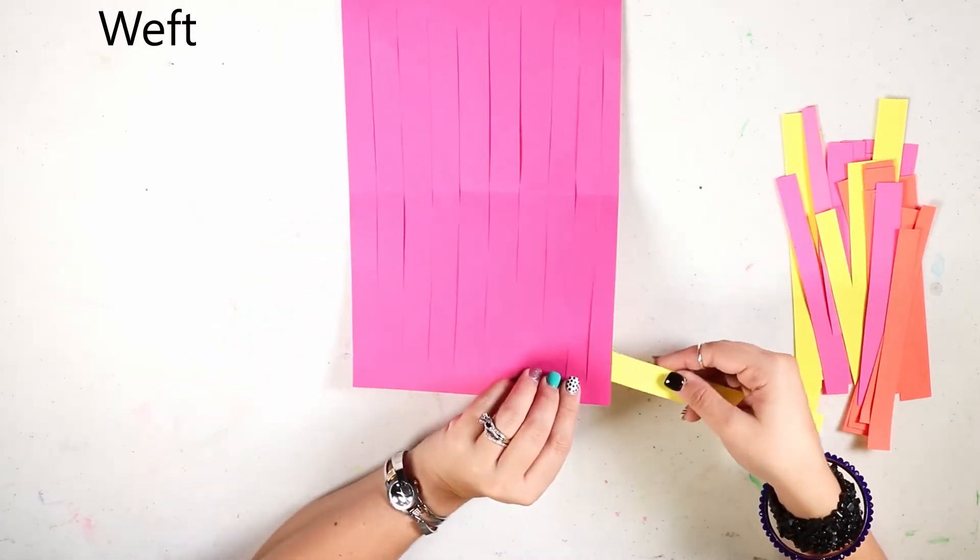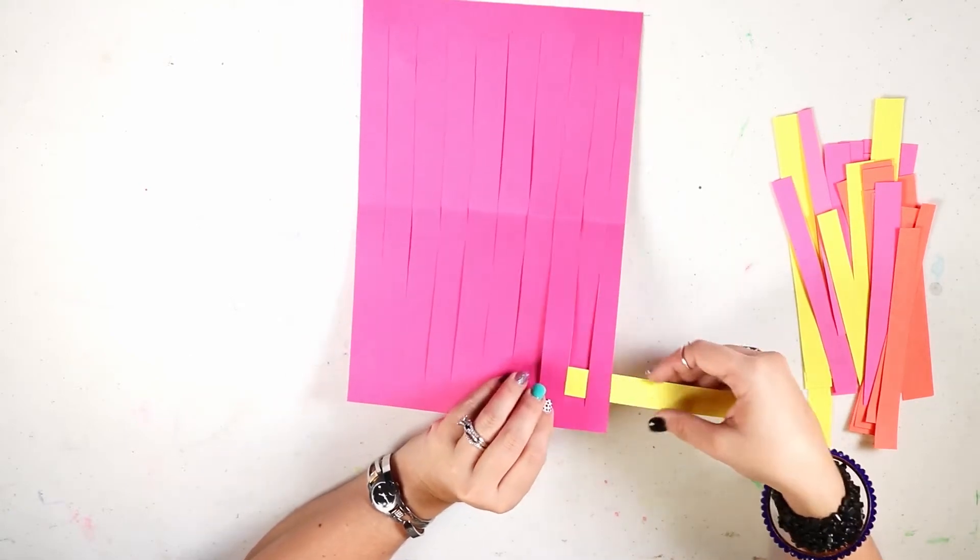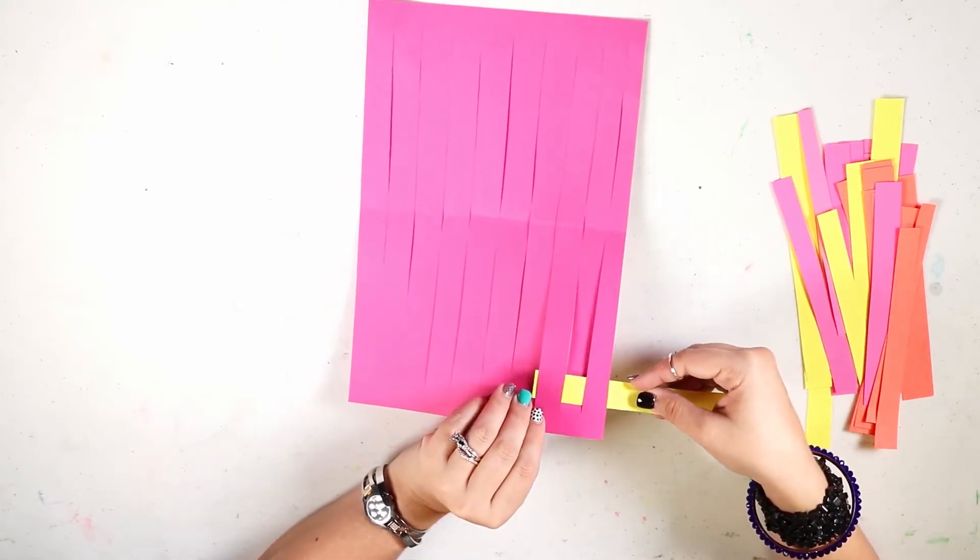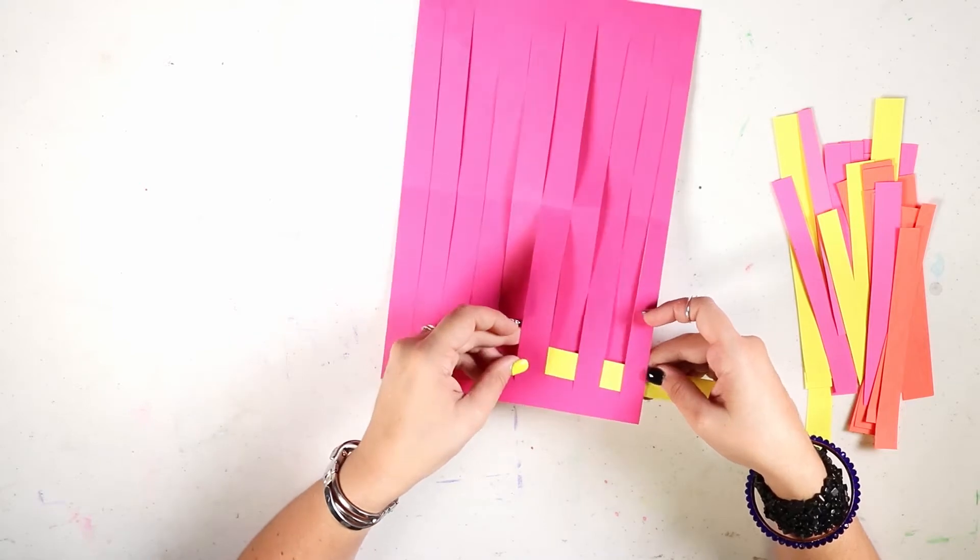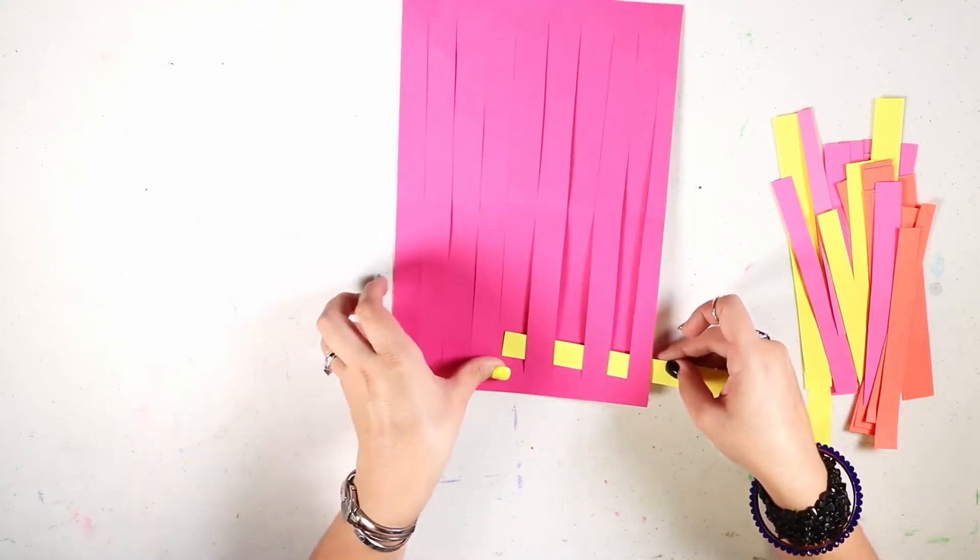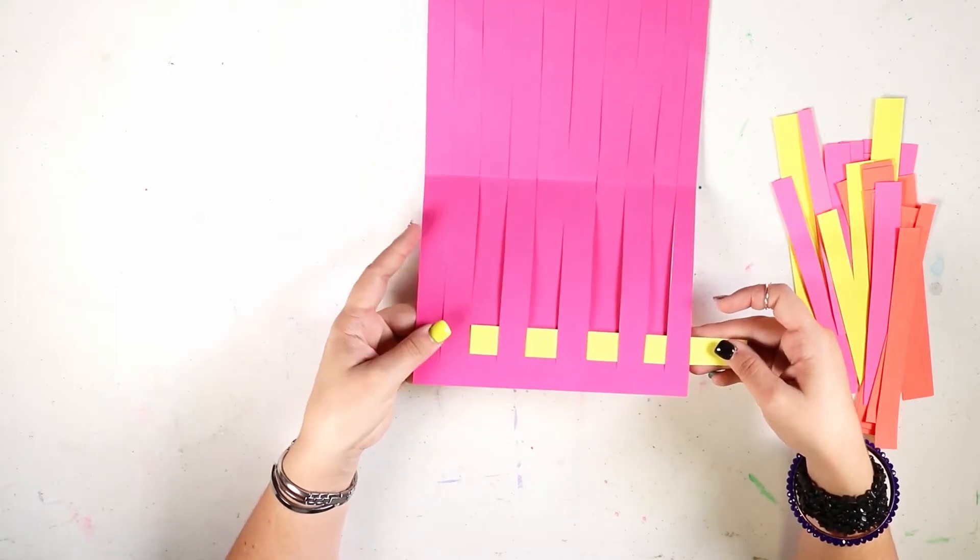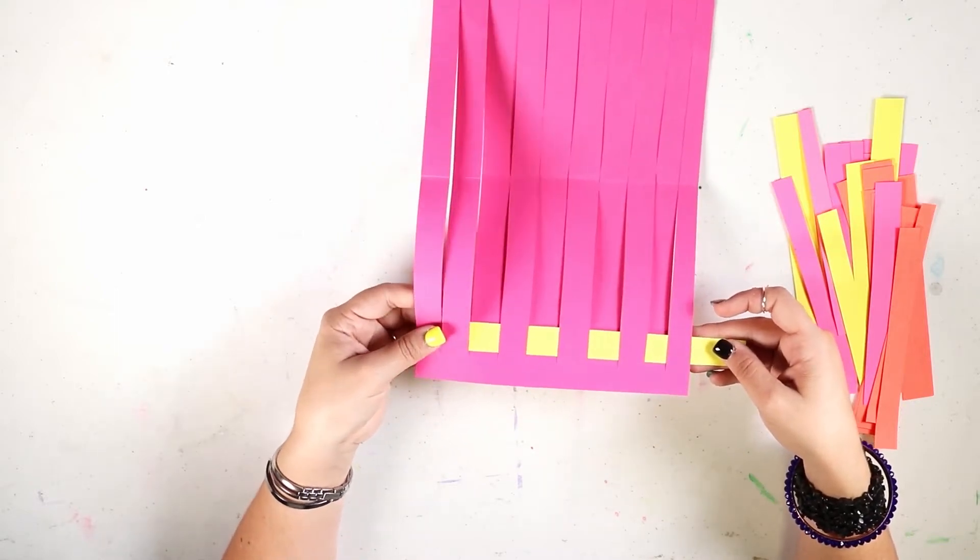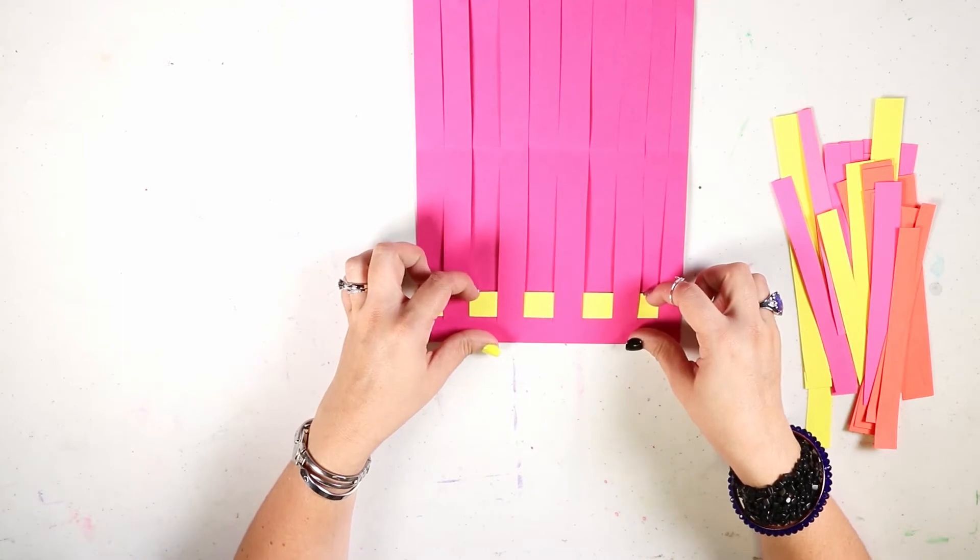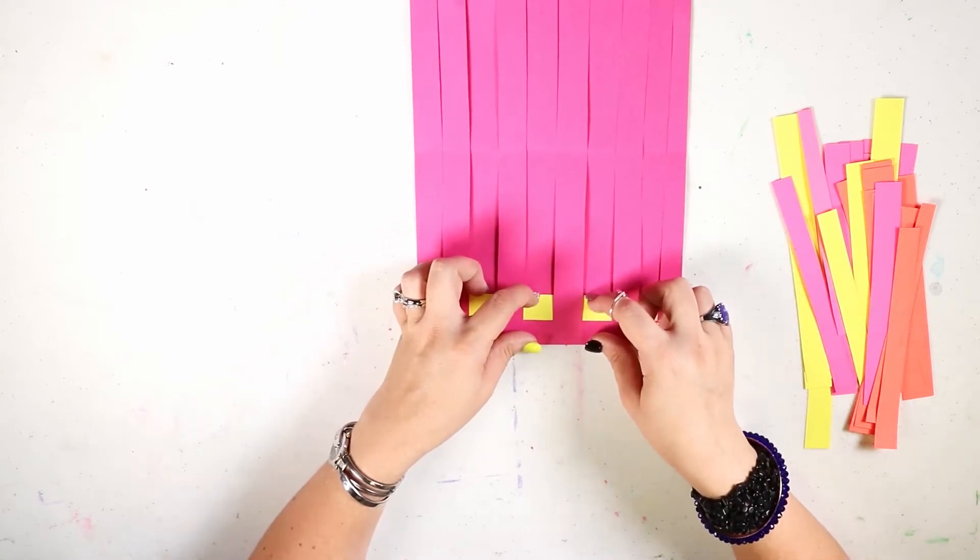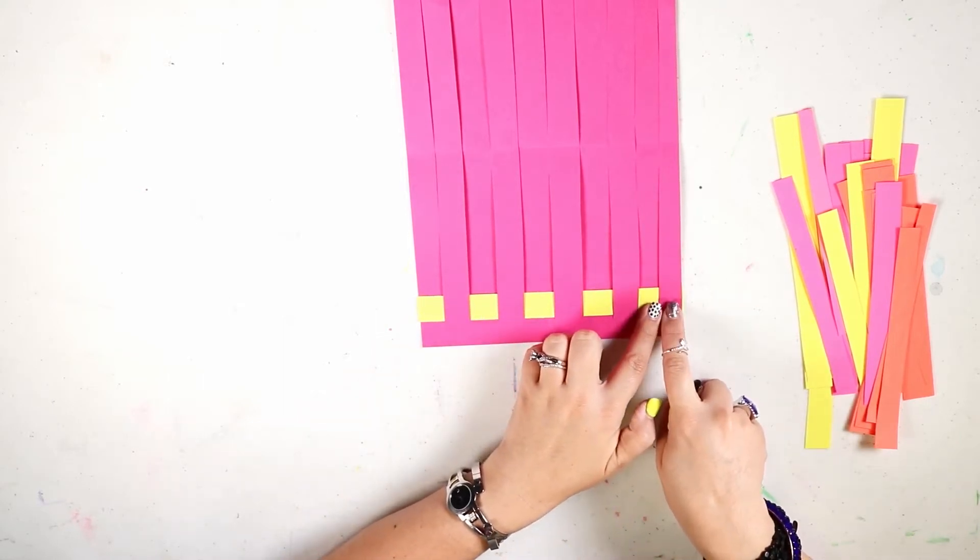So the yellow piece of paper I have is called a weft and you're going to start at the bottom and you're going to go under the first warp and over the second. So this is the pattern that you're going to be creating. So I went under, over, under, over, and now I'm going to go under, over, under, over, under, and then the very last one I'm going to go over that warp. I'm going to take the weft and I'm going to pull it really tight toward the bottom. Don't push too hard so that you don't make holes or rip your paper.